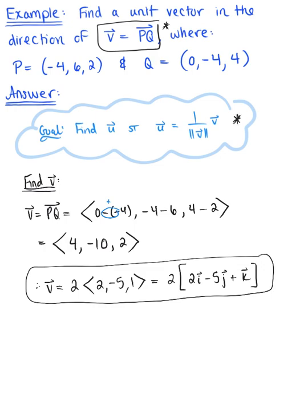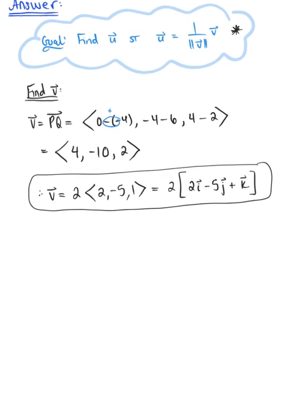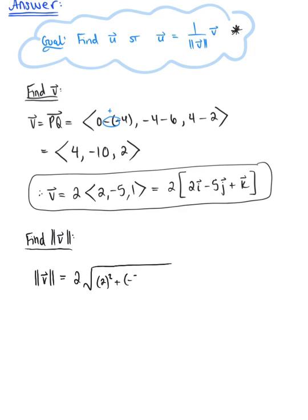Now that we have the components of vector v, let's find the magnitude of it. I'm going to apply the length of a scalar multiple property. So the magnitude of vector v is going to be equal to 2, keeping that scalar multiple on the outside of our distance formula. This will be 2 times the square root of 2 squared plus (-5) squared plus 1 squared, which simplifies to 2 times the square root of 4 plus 25 plus 1, leaving us with 2 times the square root of 30.